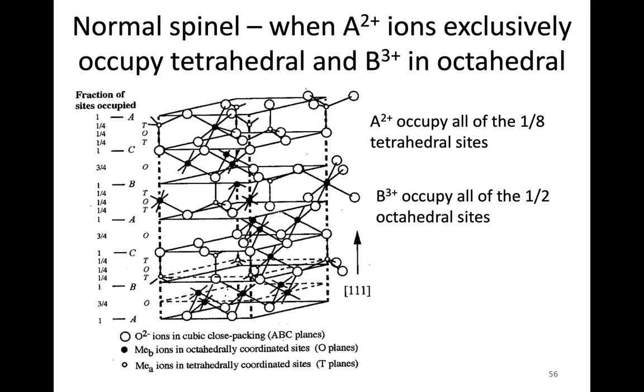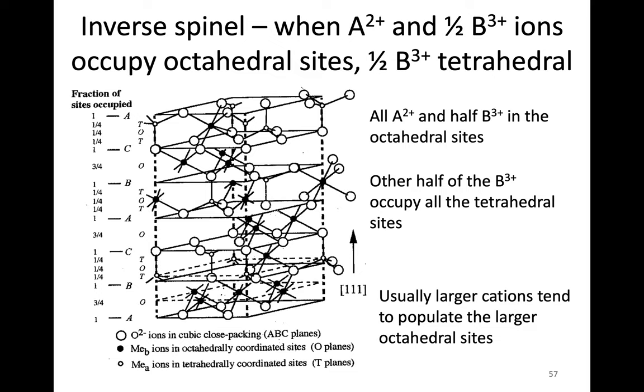There's actually the opposite, so we can have what we call the inverse spinel structure. This has the same stoichiometry, but what happens here is that we have A sites and half the B sites go into octahedrals, and the rest of the B sites go into the tetrahedrals. Because there were two times the number of B sites, this can happen.